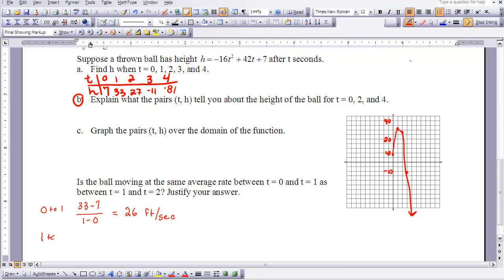And now let's go from one to two. So we're going to look at 27 minus 33 over 2 minus 1, and that's going to be negative 6 feet per second squared. So if you notice, from zero to one, I had 26 feet per second squared. From one to two, I had negative 6 feet per second squared. So our ball is not moving at the same average rate as it progresses through time.